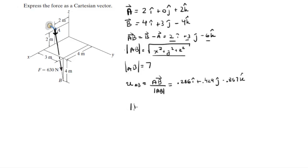Now that you have this unit vector, and you know that the magnitude of the force is 630 newtons, to find the Cartesian vector form of the force, you multiply the magnitude by the unit vector aiming in its direction.